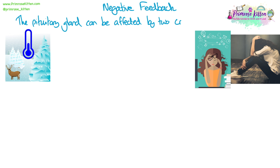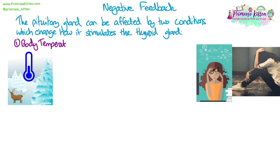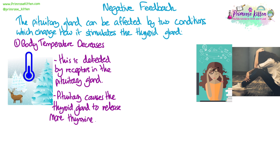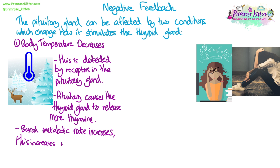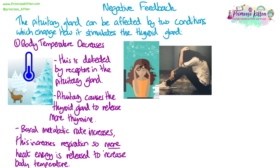The pituitary gland can be affected by two conditions which change the amount of thyroxine produced. The first is when your body temperature decreases significantly below 37 degrees - this is detected by blood temperature receptors in the pituitary gland, causing it to stimulate the thyroid gland to release more thyroxine. More thyroxine increases your basal metabolic rate, which increases the rate of respiration in the body, releasing more heat energy to increase your body temperature. Since respiration is an exothermic reaction, the heat released can warm up the body.